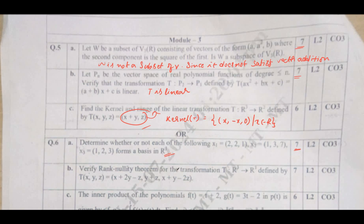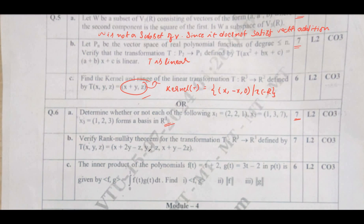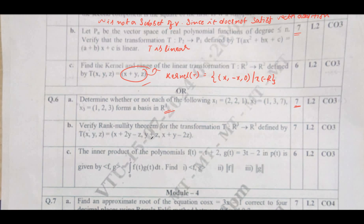Verify the rank-nullity theorem for the transformation T: ℝ³ → ℝ³ defined by T(x, y, z) = (x + 2y − z, y + z, x + y − 2z). The resulting matrix reduces such that the rank is 2 and the nullity is 1. To verify: 2 + 1 = 3, confirming the theorem. Hence the theorem has been verified for the given transformation. It carries 7 marks.